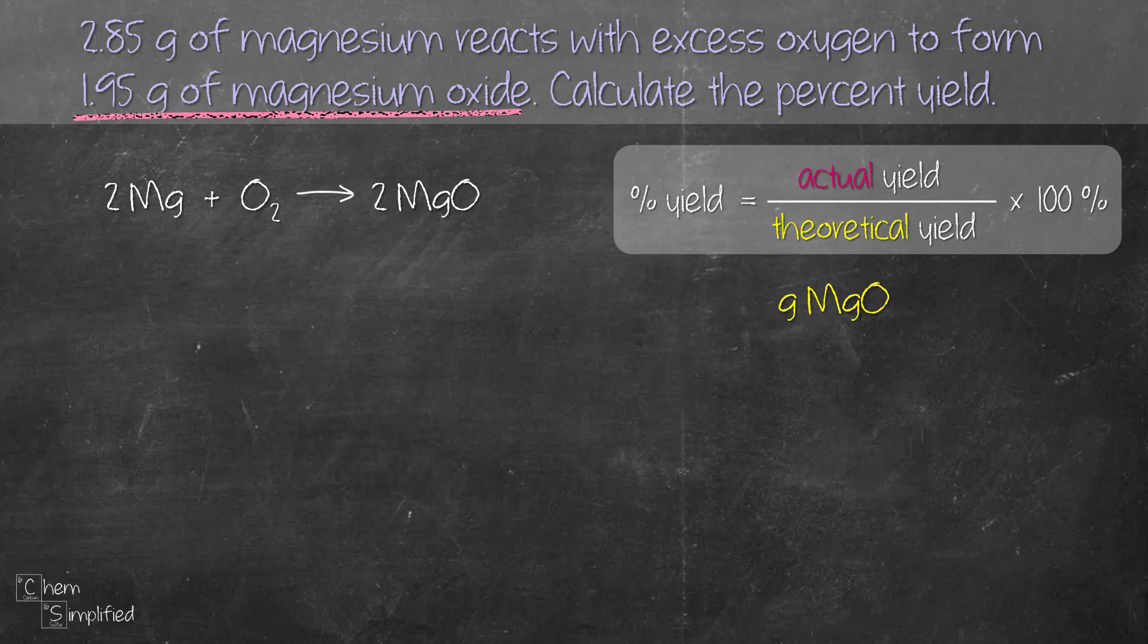We start with 2.85 grams of magnesium. From that, we're going to convert it to moles of Mg. Then from moles of Mg, we can find moles of MgO, and from moles of MgO we can convert to find grams of MgO. Our plan includes three steps. Now let's put it in motion.